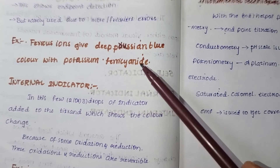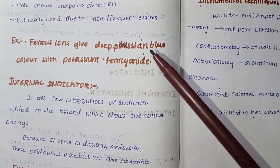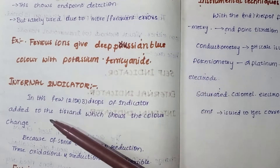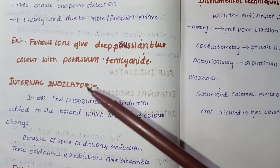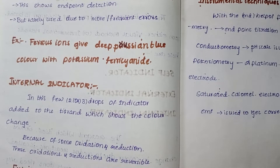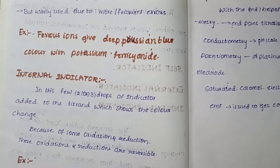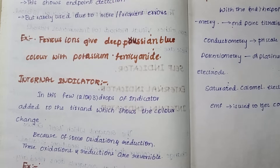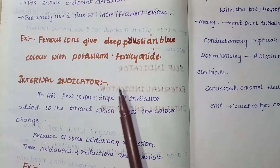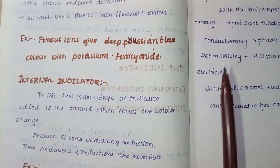For the external indicator example, ferrous ions give a deep blue color with potassium ferricyanide. So potassium ferricyanide is the indicator used here. The sample from the conical flask is placed on the tile, and two or three drops of this indicator are added to detect the end point.